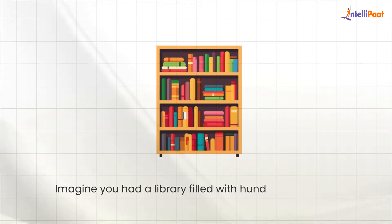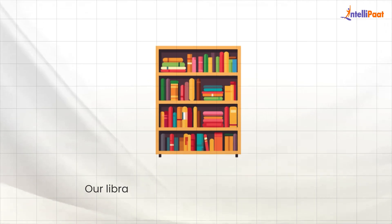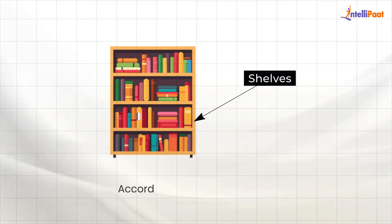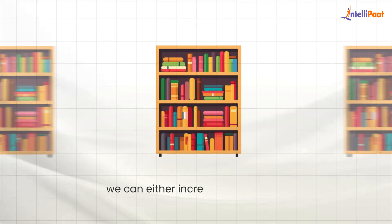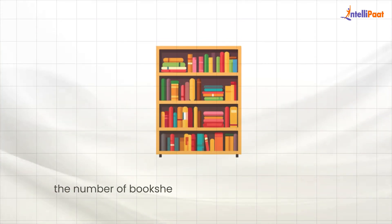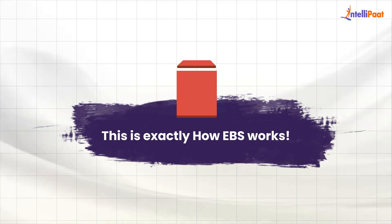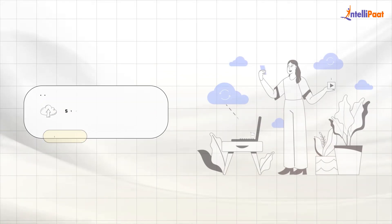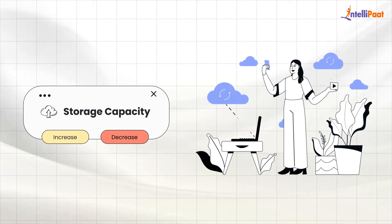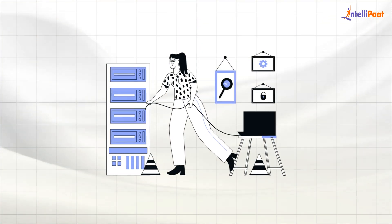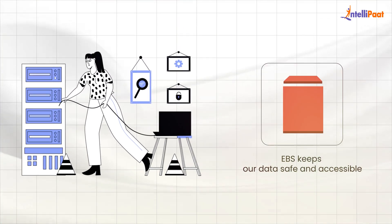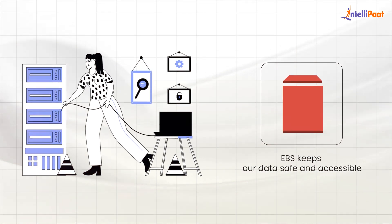Let's break it down with a library illustration for better understanding. Imagine you had a library filled with hundreds of books. Our library needs shelves to store our books. According to our requirements, we can either increase or decrease the number of bookshelves to accommodate our books. This is exactly how EBS works. EBS also keeps our data safe and accessible even if the virtual computer it's attached to is turned off — just like books in a closed library remain safe.